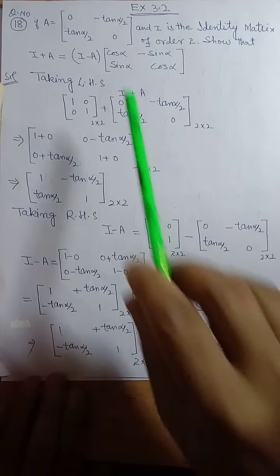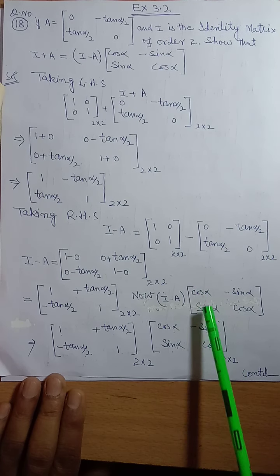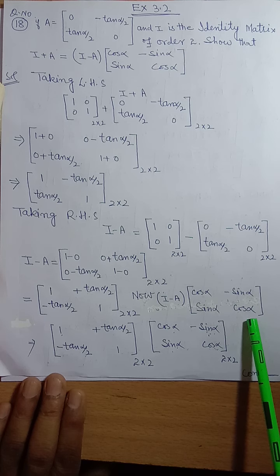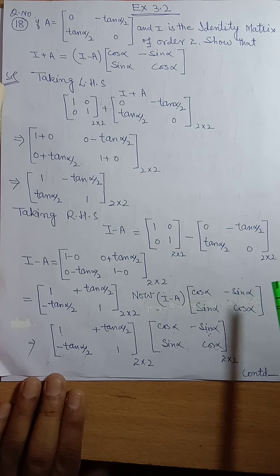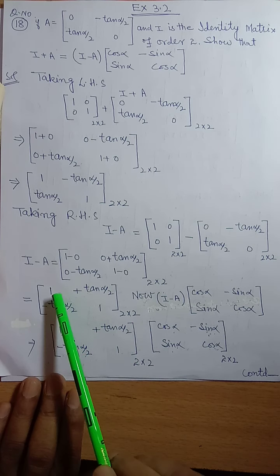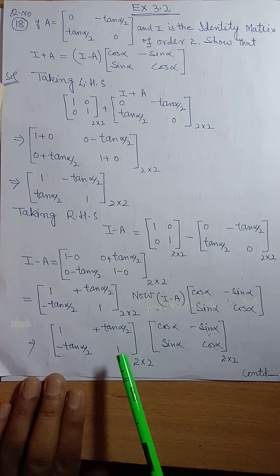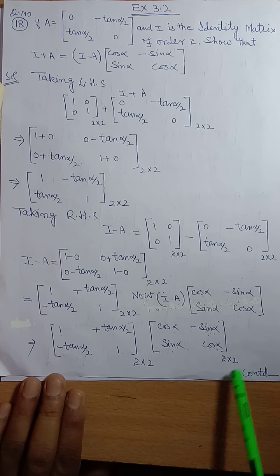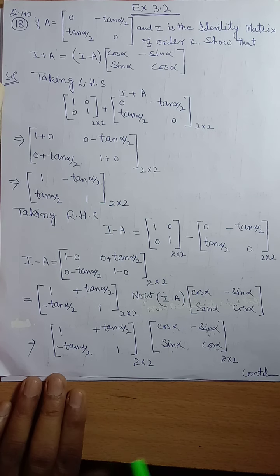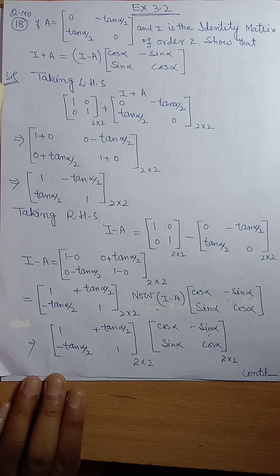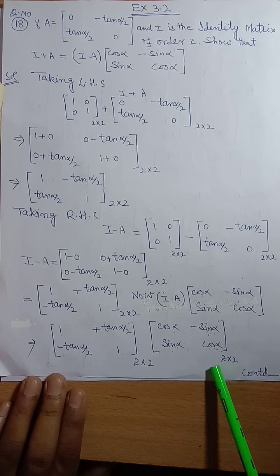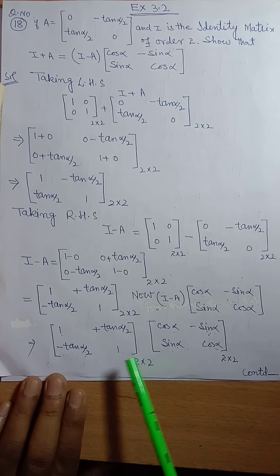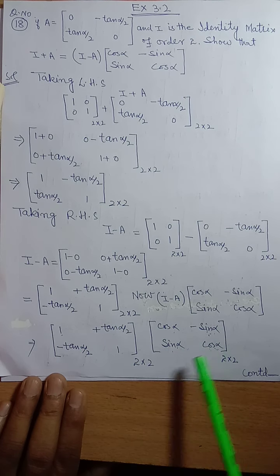Now, I minus A times [cos alpha, -sin alpha; sin alpha, cos alpha]. So I minus A is [1, tan(alpha/2); -tan(alpha/2), 1], which is order 2 cross 2, and the trig matrix is also order 2 cross 2. Since the number of columns of the first matrix equals the number of rows of the second matrix, they can be multiplied.